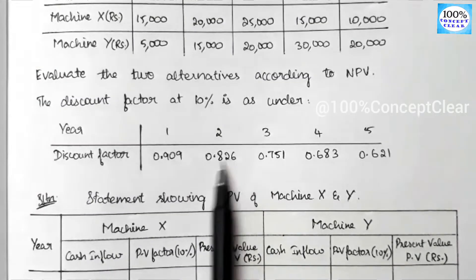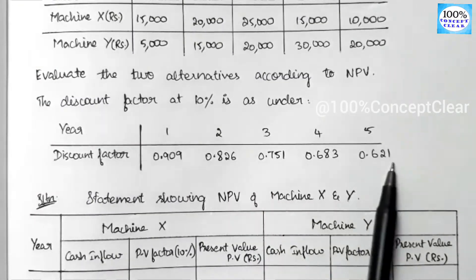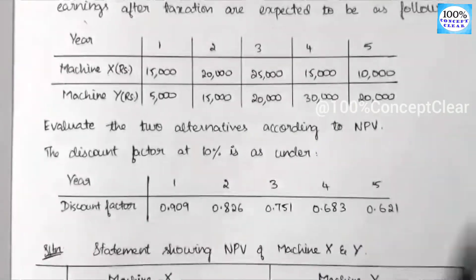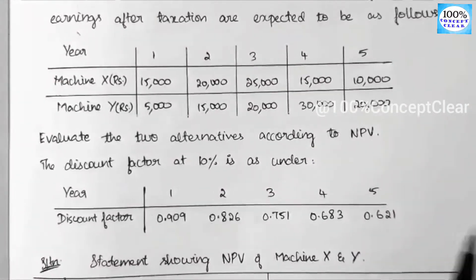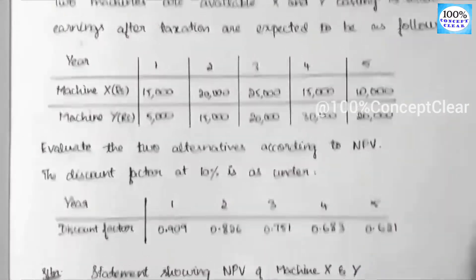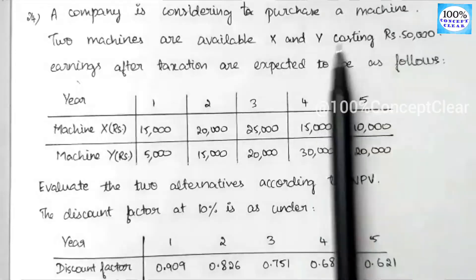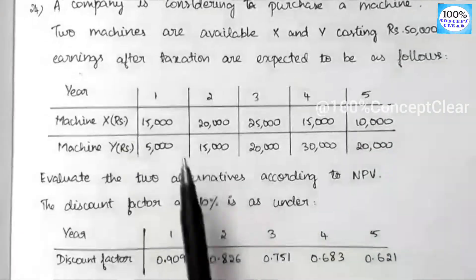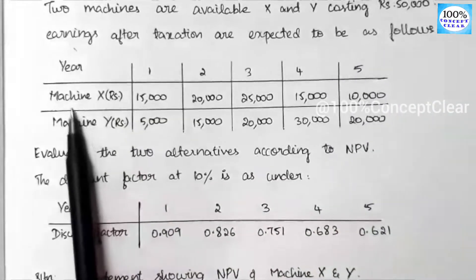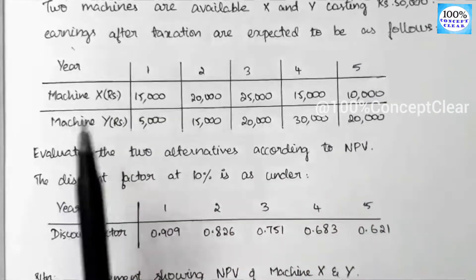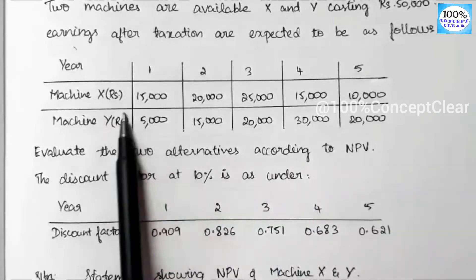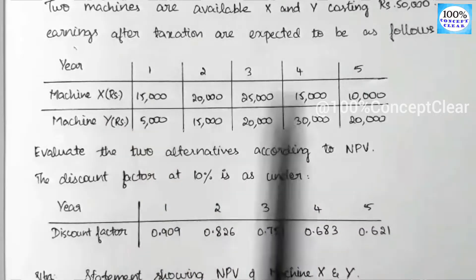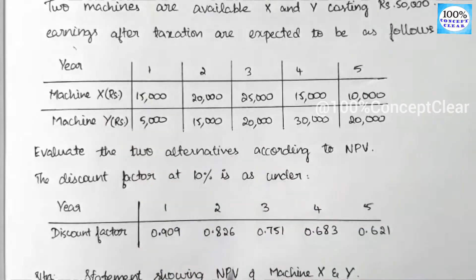The discount factor instructions are given for 5 years. In the first year, the discount factor is 0.909; the next year is 0.826. The initial investment for both machines is $50,000. We use cash flows after tax and before depreciation for this calculation.